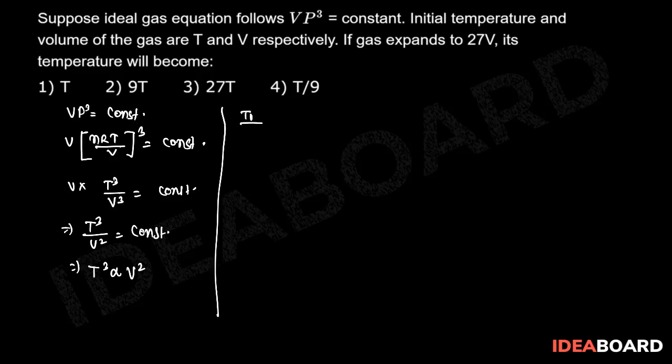For two conditions we can write T₁ by T₂ whole cube will be equal to V₁ by V₂ whole square. Now PV is equal to nRT, so P can be written as nRT by V.